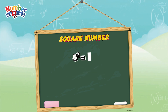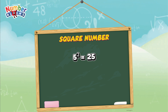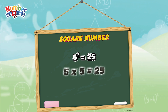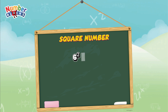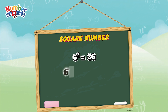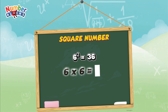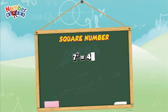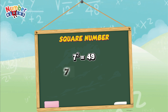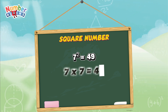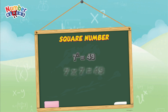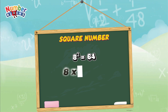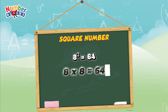Five squared is equals to twenty-five, or five multiplied by five, is equals to twenty-five. Six squared is equals to thirty-six, or six multiplied by six, is equals to thirty-six. Seven squared is equals to forty-nine, or seven multiplied by seven, is equals to forty-nine. Eight squared is equals to sixty-four, or eight multiplied by eight, is equals to sixty-four.